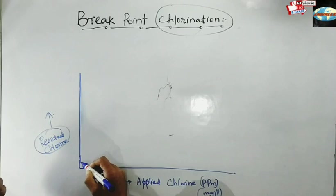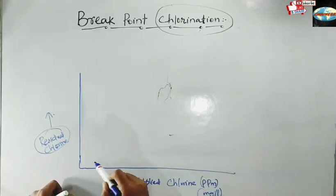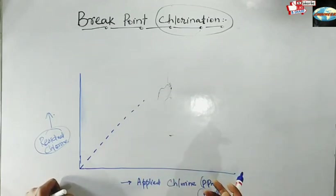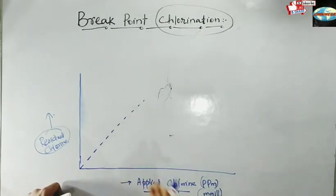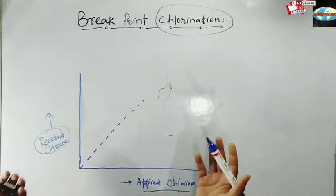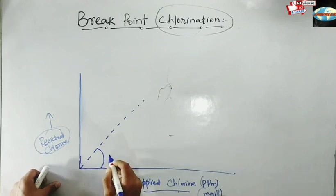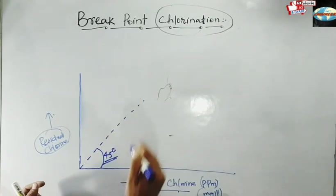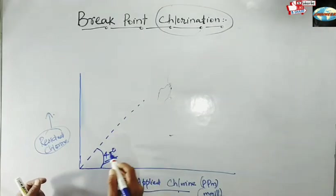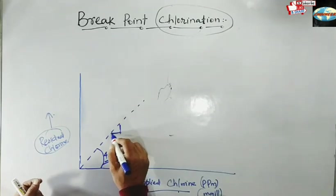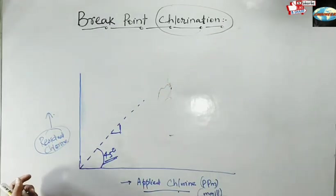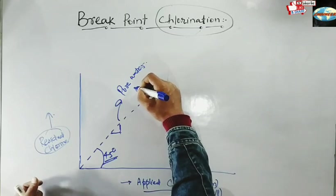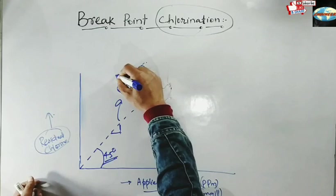When we actually apply chlorine to a pure water sample — one that doesn't have any bacteria, organic matter, or anything for chlorine to react with — the whole of the chlorine will be residual chlorine. The slope of this curve will be 1, and the angle will be 45 degrees, because applied chlorine equals residual chlorine in a pure water sample.